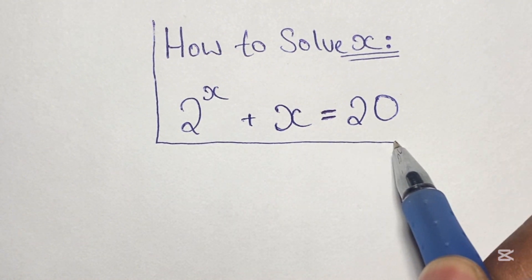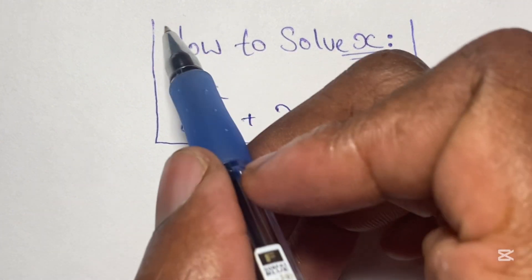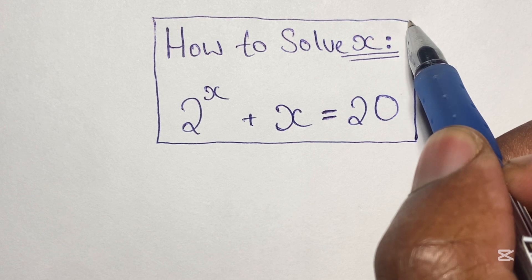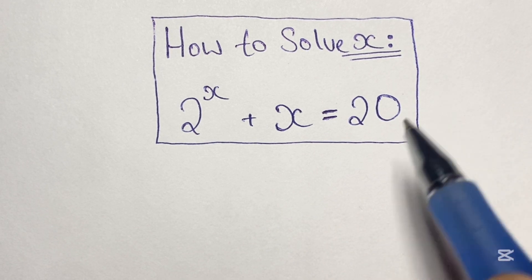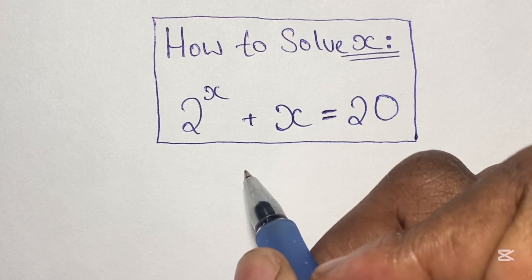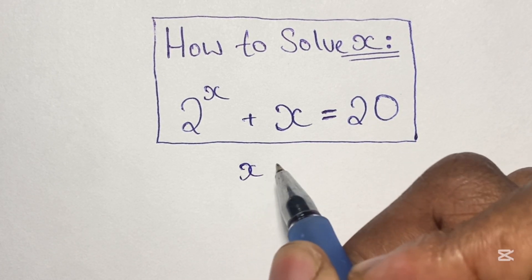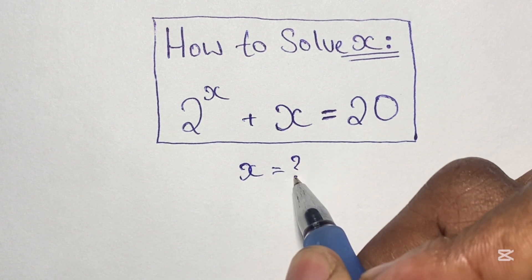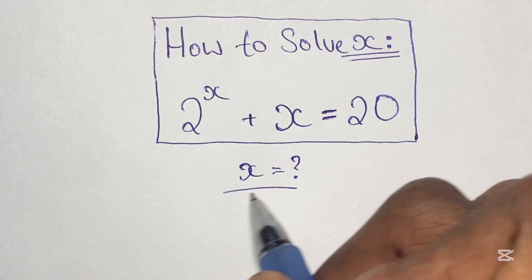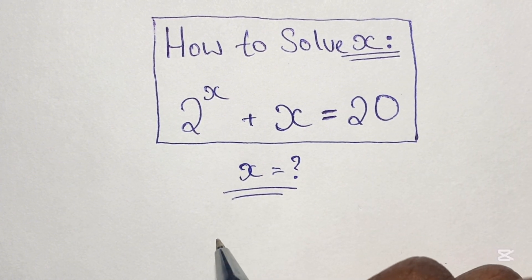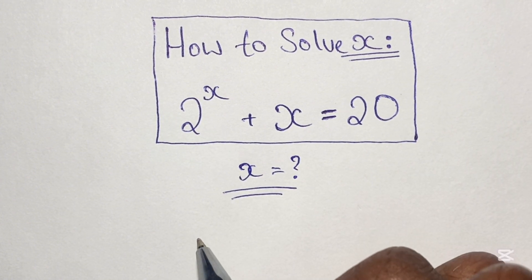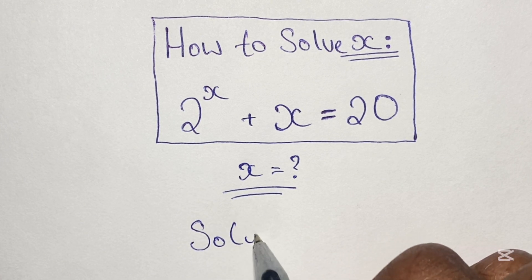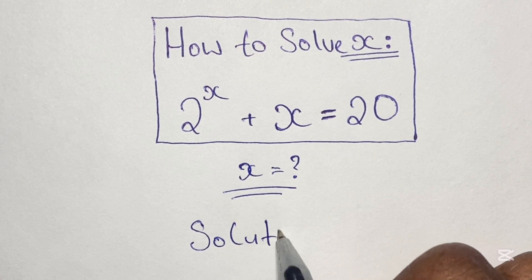Just by looking at this equation, I know that you have probably guessed it that x is equal to 4. But how do we actually show all working that x is indeed equal to 4? While many may have guessed that the answer is 4, not many can show that x is indeed equal to 4. If you want to learn how to solve this equation, please stay with me to the end of this video.